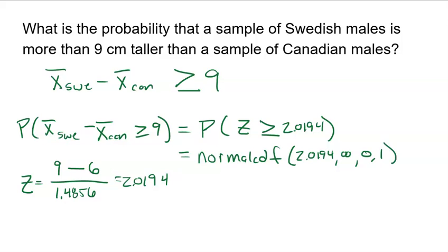If you do that on your calculator, once you understand the process here, and I hope we've been doing this enough that you do, it becomes very fast to find these probabilities. It is 0.0217. So about a 2.2% chance that the sample from Sweden comes back 9 centimeters or more than the sample from Canada.